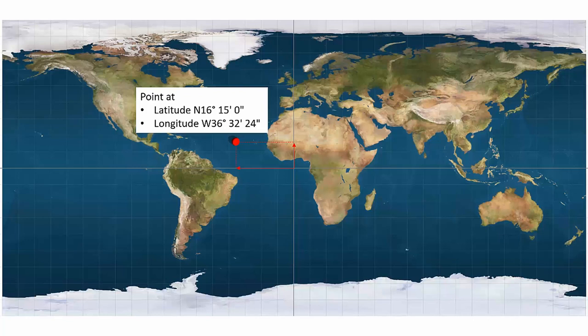You might represent a location more precisely as degrees, minutes, seconds. Here we have a point at north 16 degrees, 15 minutes, 0 seconds. There are 60 minutes in a degree. Longitudinally, it's west 36 degrees, 32 minutes — a little more than half a degree to the west — and 24 seconds. You could also have decimal seconds at the end to get more precise measurements of those locations.